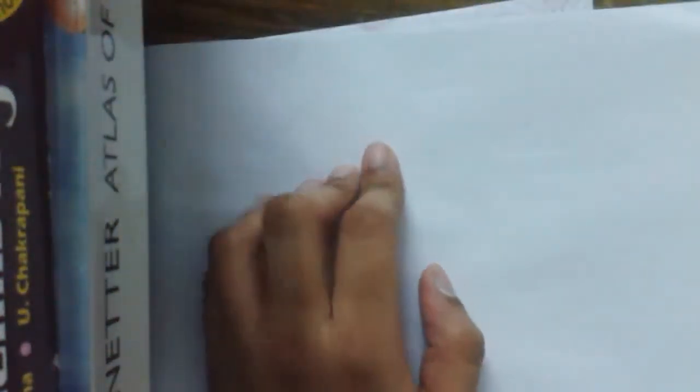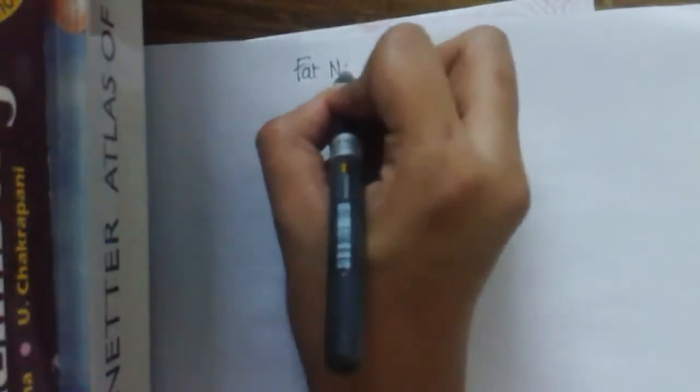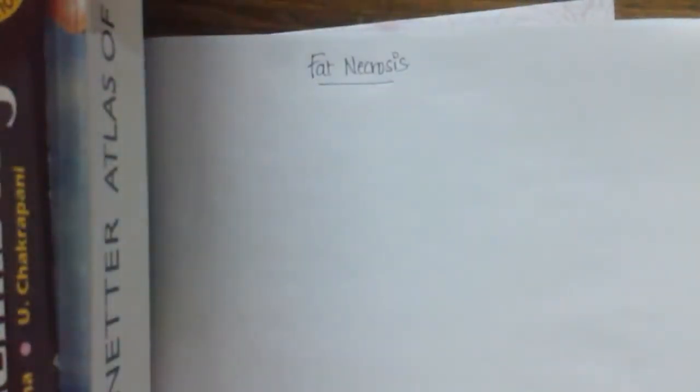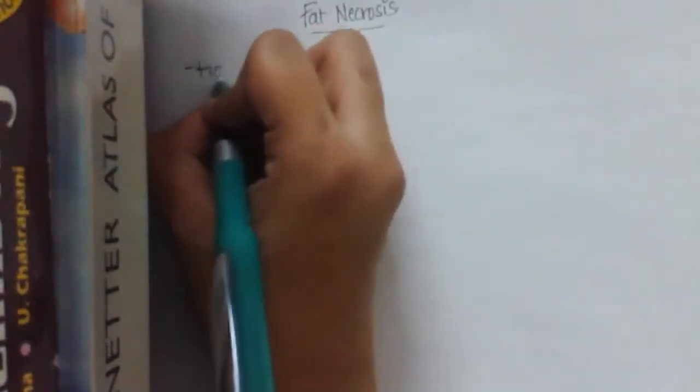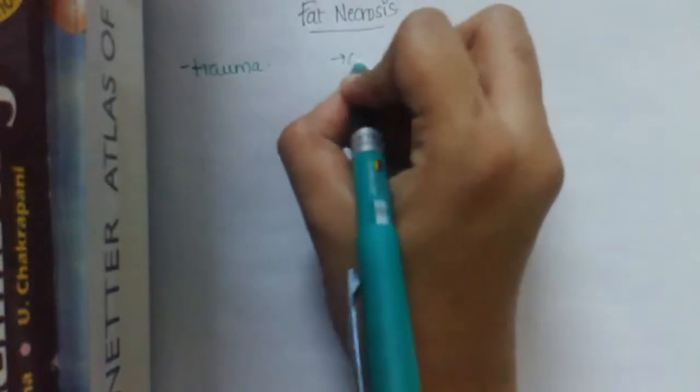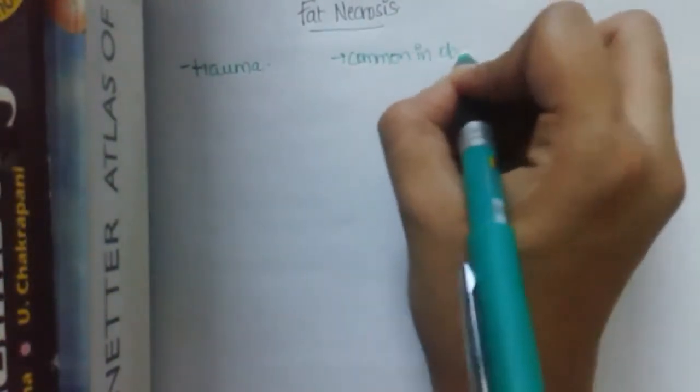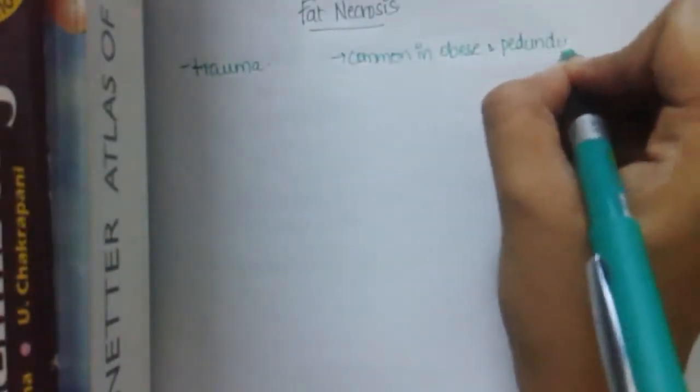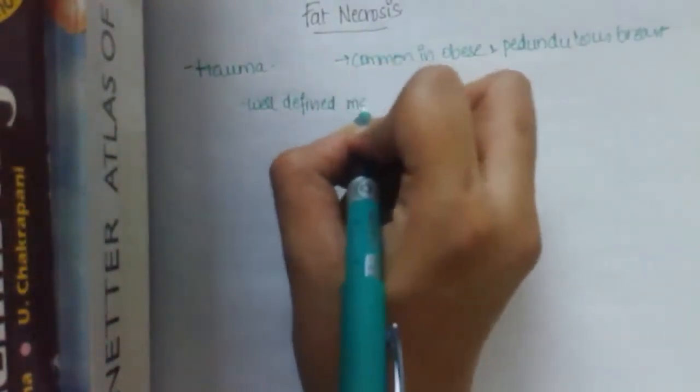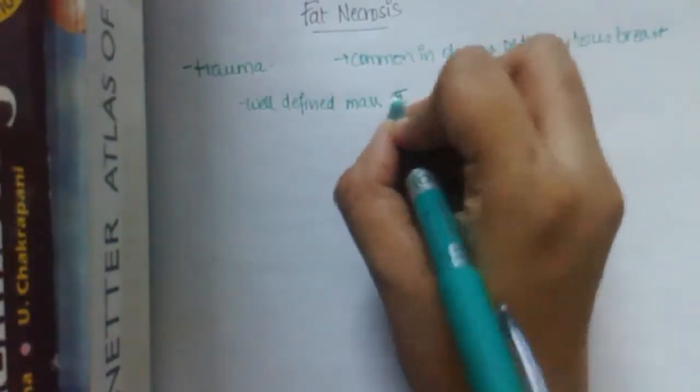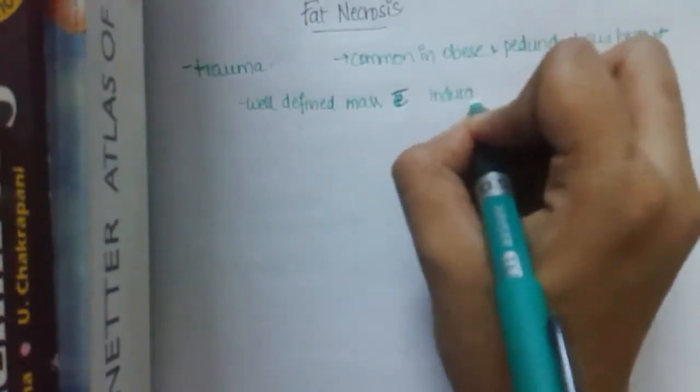And the next one which I would like to discuss which is a really small topic is fat necrosis. So in fat necrosis, it is probably caused by an inflammatory reaction which is most probably initiated by trauma. Trauma is the main reason. And it is common in obese and pendulous breast and the women with pendulous breast. And in this, there is when defined mass is seen with indurated appearance.